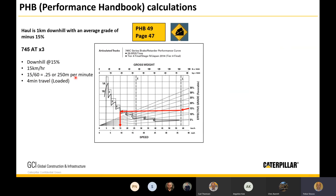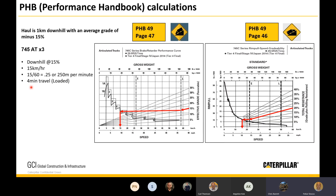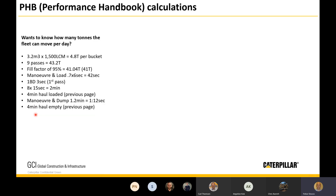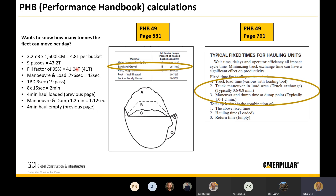For the return trip uphill, we use the rimspull speed and rolling resistance table. This time we add 15 percent uphill plus five percent rolling resistance to get 20 percent total. Following the arrow down to the empty line and across to the gear, we get approximately 16 to 17 km/h. Taking 15 km/h again conservatively, the maths gives us a four-minute empty travel time.